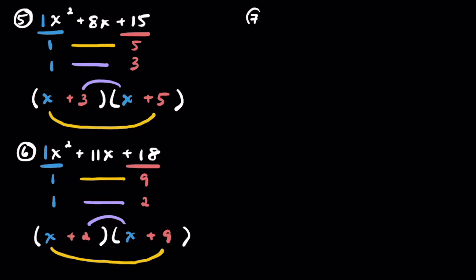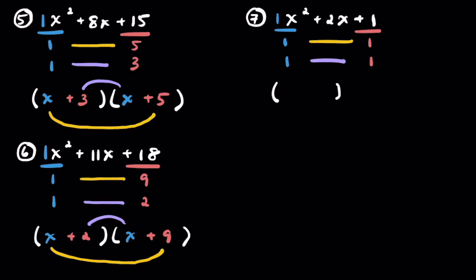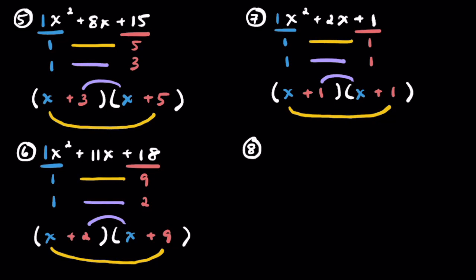Problem 7: x squared plus 2x plus 1. Leading coefficient of 1, and the constant is 1 — so we must use 1 and 1. These will be the outers and inners. This is actually interesting — this is called a perfect square trinomial because you're multiplying something by itself. The answer is (x + 1)(x + 1).